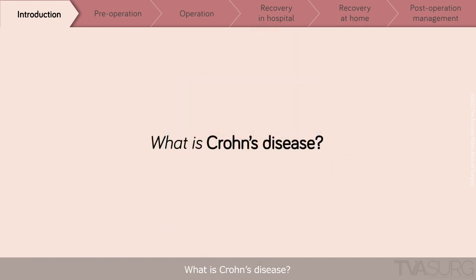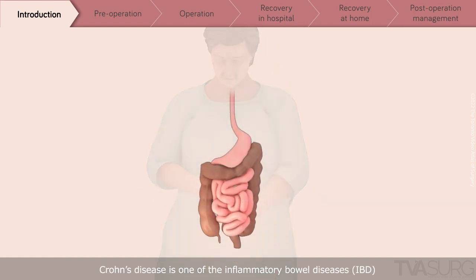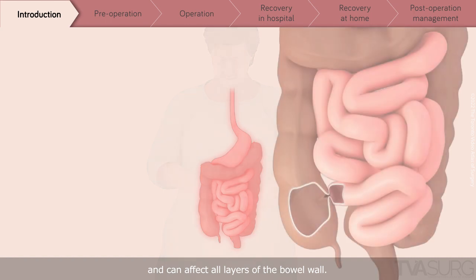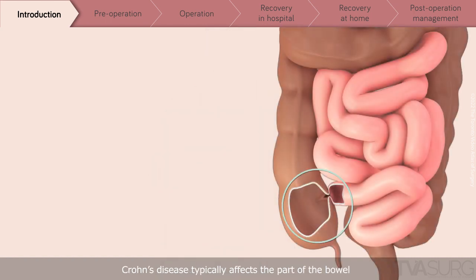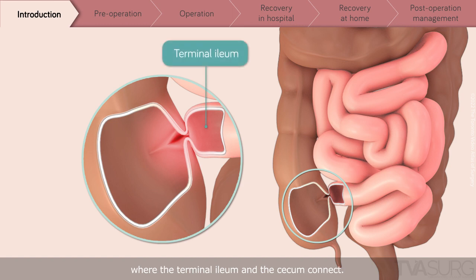What is Crohn's disease? Crohn's disease is one of the inflammatory bowel diseases, IBD, that can affect any part of the bowel, from gum to bum, and can affect all layers of the bowel wall. Crohn's disease typically affects the part of the bowel where the terminal ileum and the cecum connect.